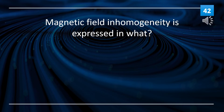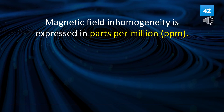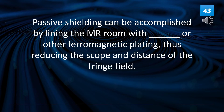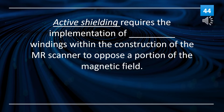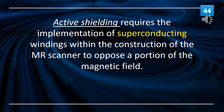Magnetic field homogeneity is expressed in parts per million (PPM). Passive shielding can be accomplished by lining the MR room with steel or other ferromagnetic plating, thus reducing the scope and distance of the fringe field. Active shielding requires the implementation of superconducting windings within the construction of the MR scanner to oppose a portion of the magnetic field.